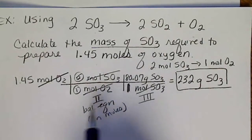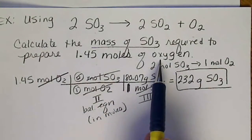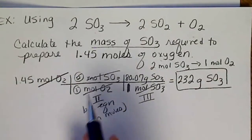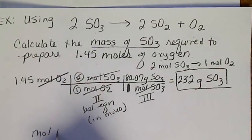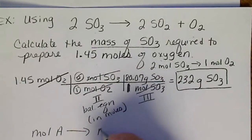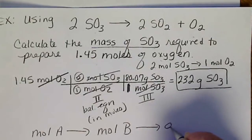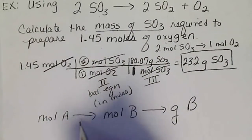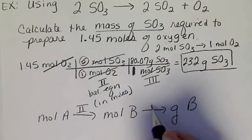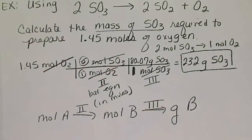So, again, we were given moles of SO3, so we already had moles of A. So we went from moles of A to the balanced equation to convert to moles of B. Once we had moles of B, we did the molar mass to get to grams of B. So step 2 and step 3 only.